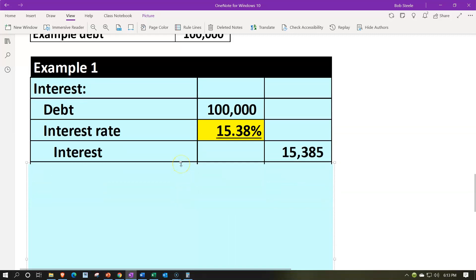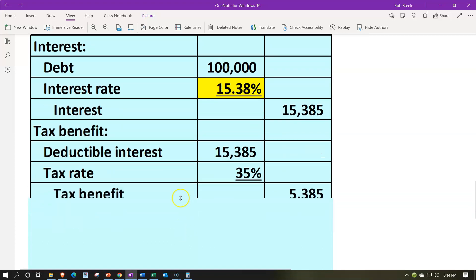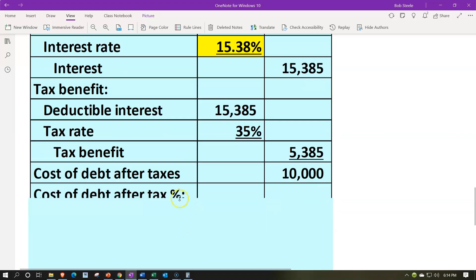And then we have a tax benefit related to this. So the tax benefit would then be the deduction of the interest, the 15,385, and 35% of that we would get a tax benefit for. So now we've got the 15,385 times the 0.35, or 35%, giving us a tax benefit of 5,385. Therefore, we would have the 15,385 interest expense, the rent on the money interest, minus the 5,385 means that we have the 10,000 cost of debt after taxes. So there's the cost of debt after taxes.